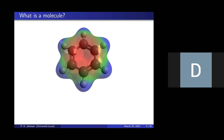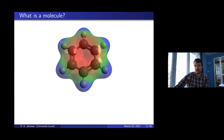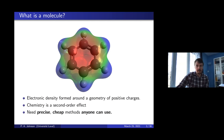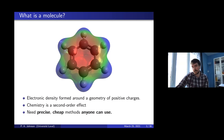What is a molecule? It's nuclei, which are positively charged, surrounded by electronic density, which is negatively charged. The electron density forms around the positive charges. Chemistry is a very small effect — the energy differences on the scale of energies are pretty small — so we need to be very precise with our answers. For our methods to be applicable, they need to be precise, cheap, and really, anyone should be able to use them. You should not have to be a specialist.